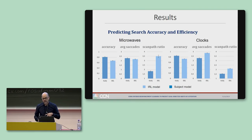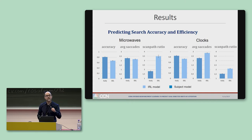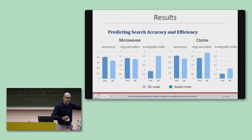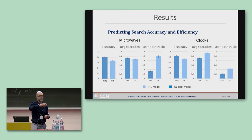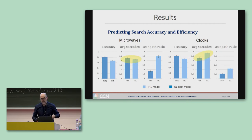Finally, we looked at accuracy and search efficiency, based on only the first six saccades, since the model only generated six saccades for computational reasons. Accuracy refers to the proportion of trials in which the target was fixated in the first six eye movements. Average saccades refers to the mean number of saccades needed to find the target on accurate trials. Scan path ratio is the sum saccade vector distance divided by the distance between the starting fixation and the target.